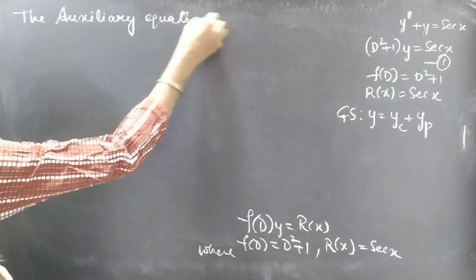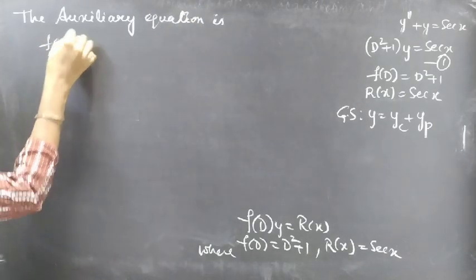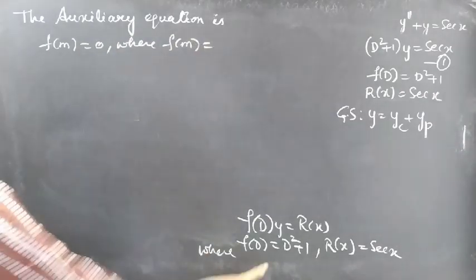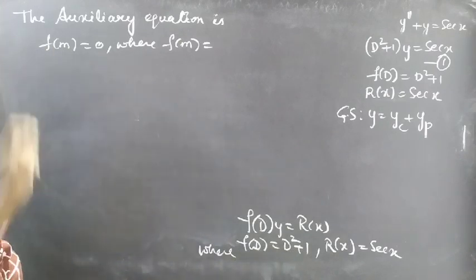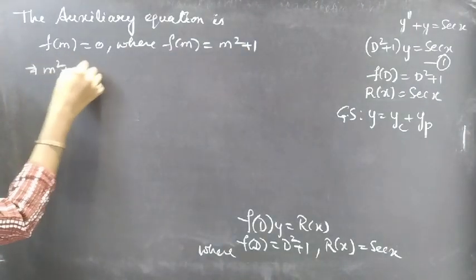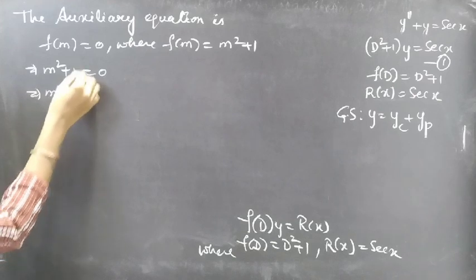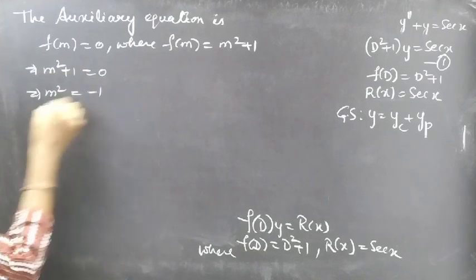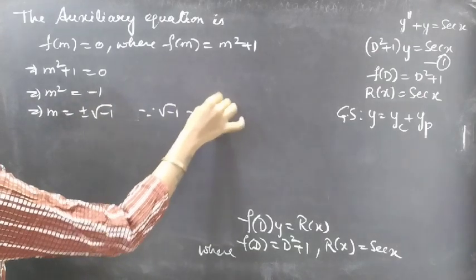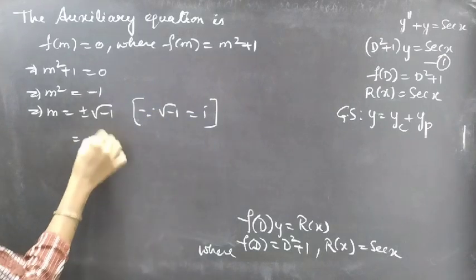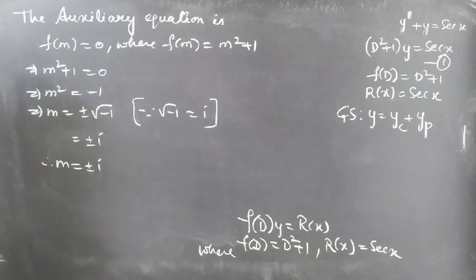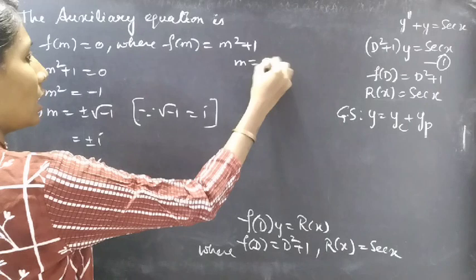The auxiliary equation is f(m) = 0. Since f(D) = D² + 1, we replace the differential operator with m to get f(m) = m² + 1. Setting m² + 1 = 0 gives m² = -1, so m = ±√(-1) = ±i.